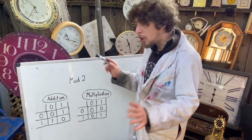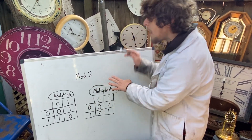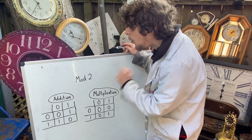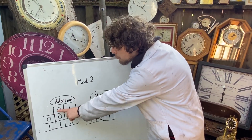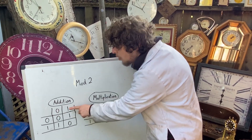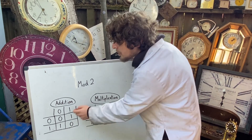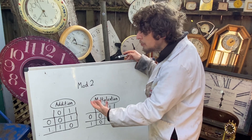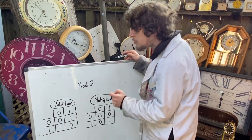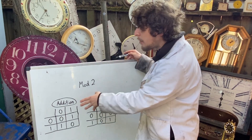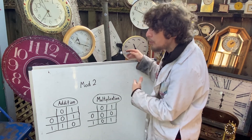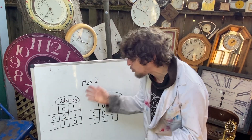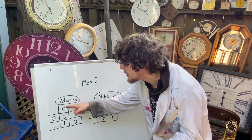Now with all the evens as zeros and all the odds as ones, we get the addition and multiplication charts from mod 2 — the realm of modular arithmetic where all whole numbers can be described as congruent to zero or one, meaning essentially the remainder they would have if we divided by two, and also meaning the last digit a number would have in base two, binary.